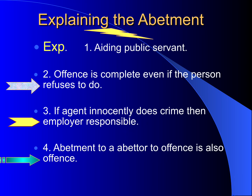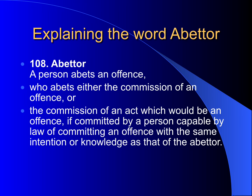Another important point here is: abetment of an abettor is also an offence. That means, one person is committing the offence, the person committing the offence is assisted by another person, and that person is further given support by yet another person — that person becomes an abettor to the abettor, and he is also liable for the offence. That is how abetment is defined.